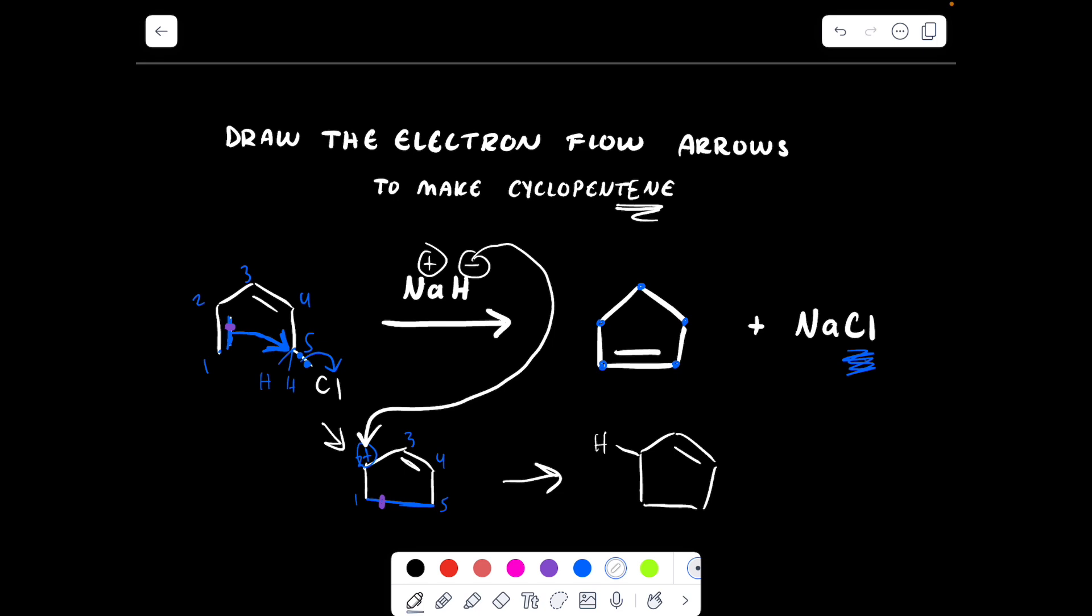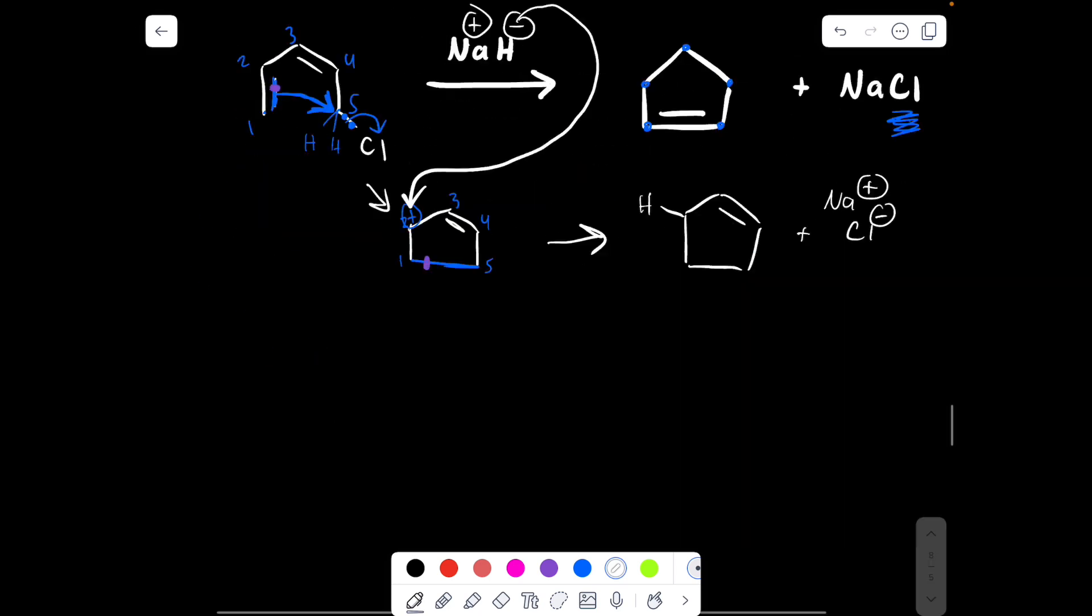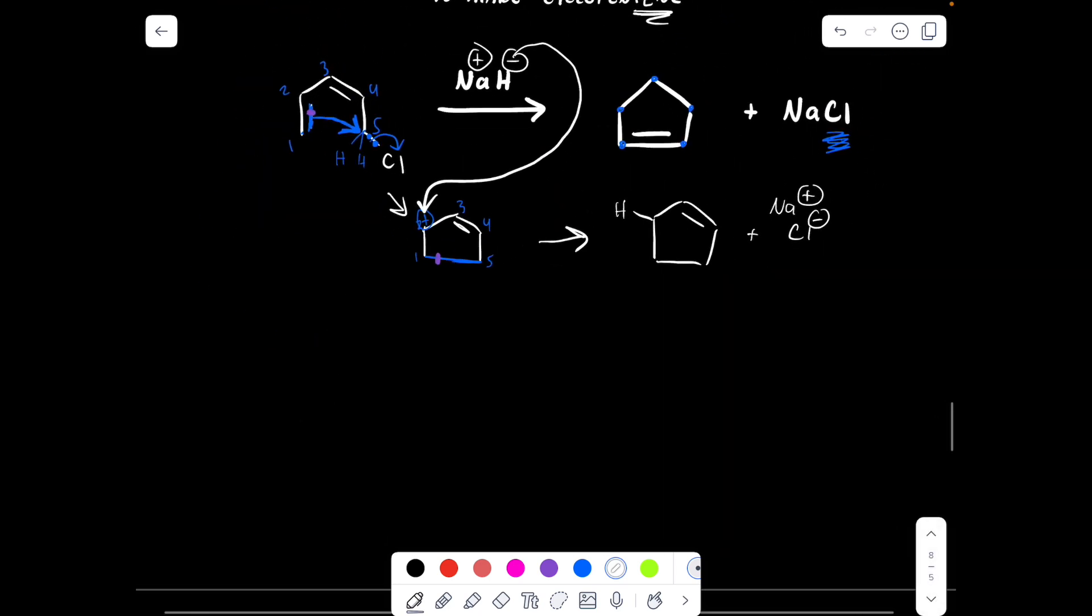So this H minus, since opposites attract, we're going to attack this positively charged carbon. What do we get? It's kind of redundant to draw on this hydrogen, but yes it is there, and we get our product, and then plus Cl minus. And then we know there's an Na plus floating around, so let's put this all together.